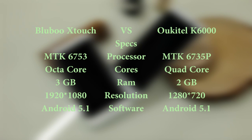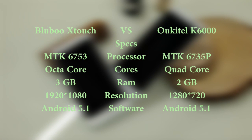Taking a quick look at their specifications: on one side we have the Octa-Core processor and 3GB RAM with a 2K HD display. On the other side we have the quad-core processor and 2GB RAM with a HD display.